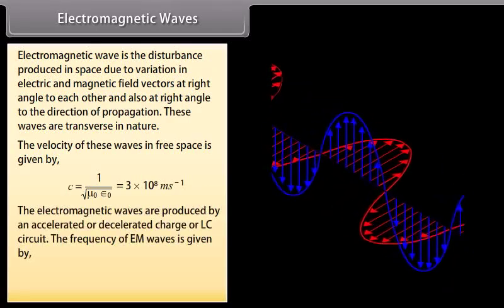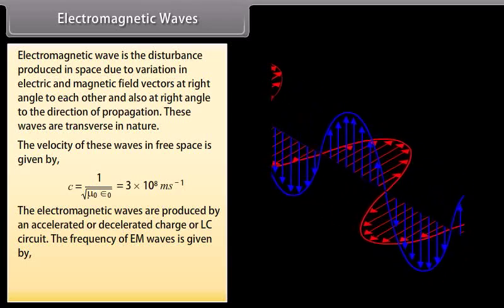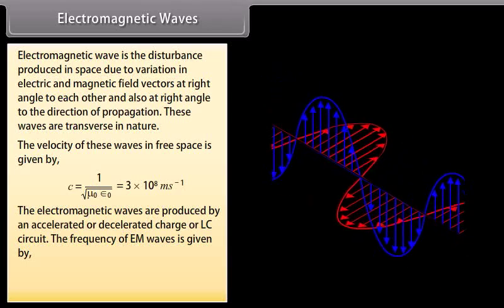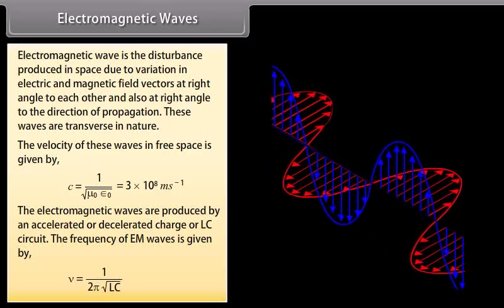The electromagnetic waves are produced by an accelerated or decelerated charge of LC circuit. The frequency of EM waves is given by 1 upon 2 pi under root LC.